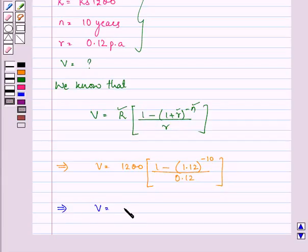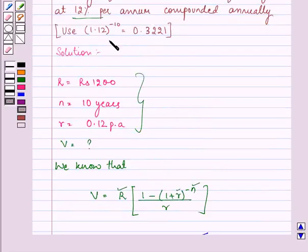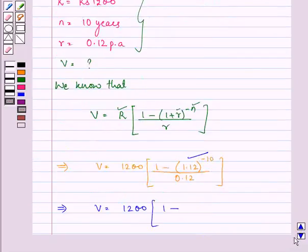We have V is equal to 1200 into 1 minus, its value is given to us in the question itself, so it is 0.3221 upon 0.12.